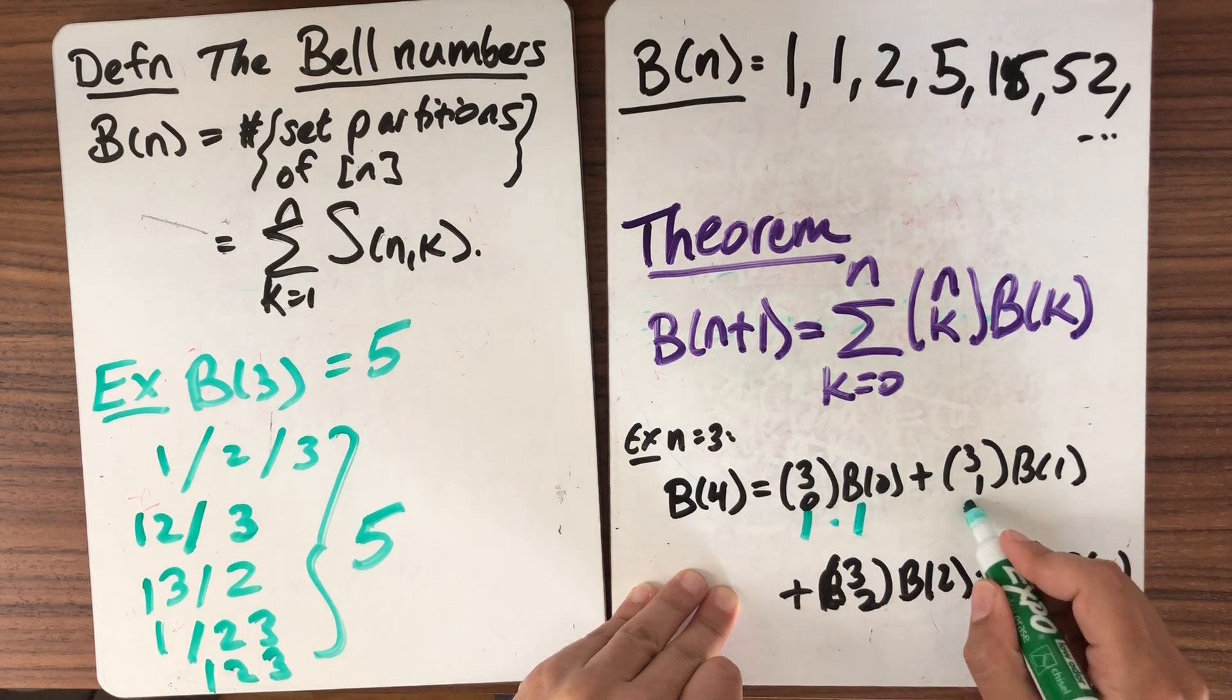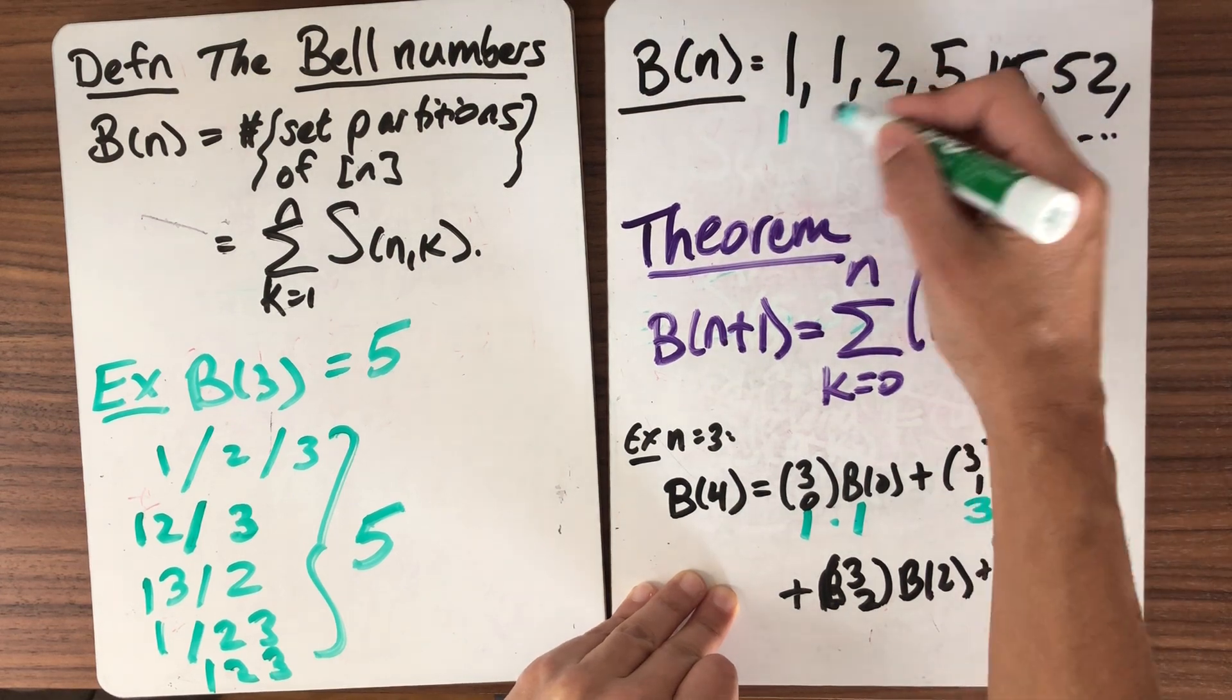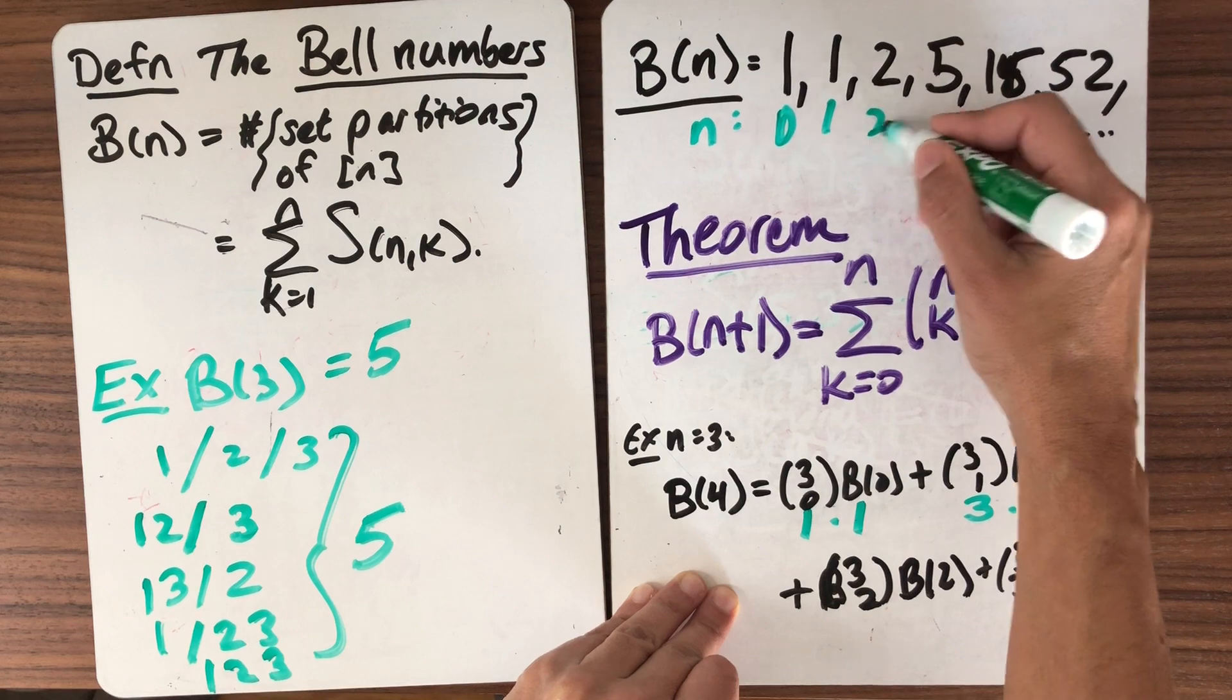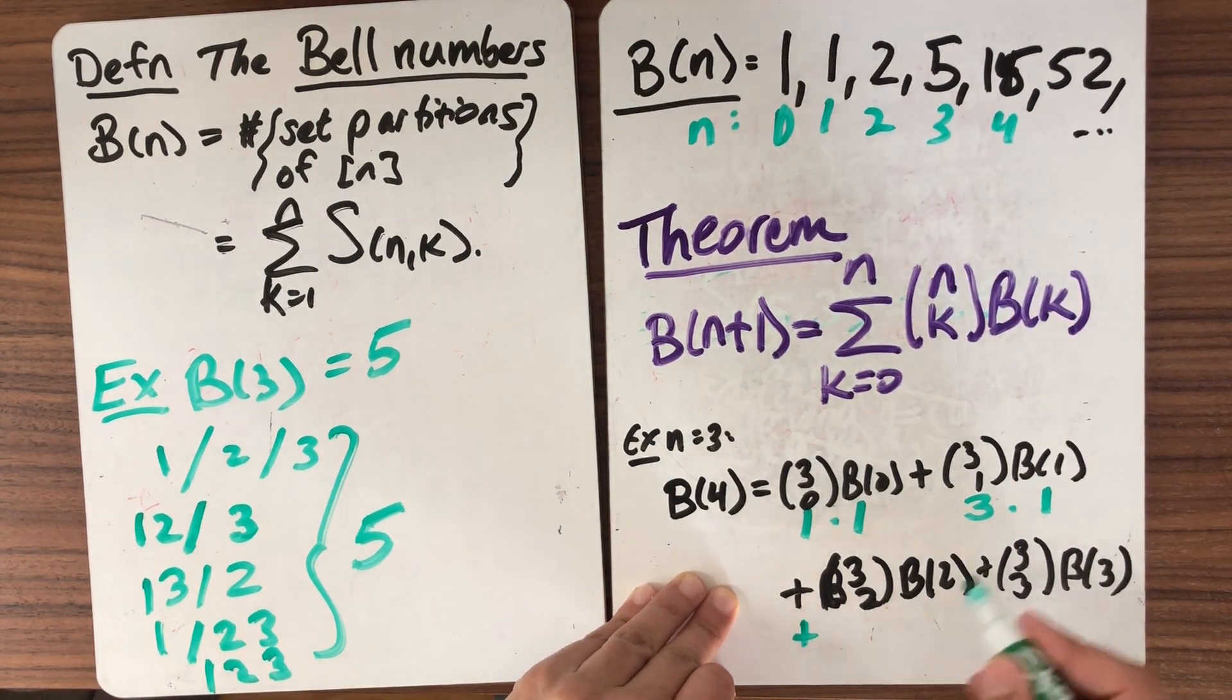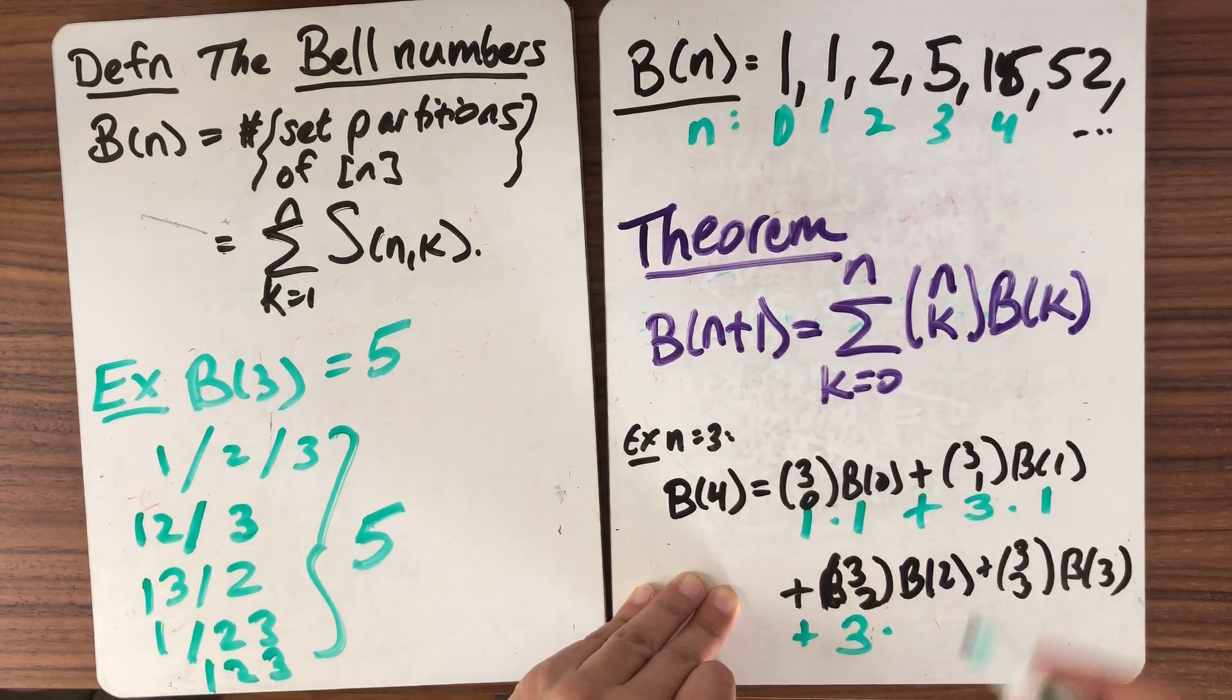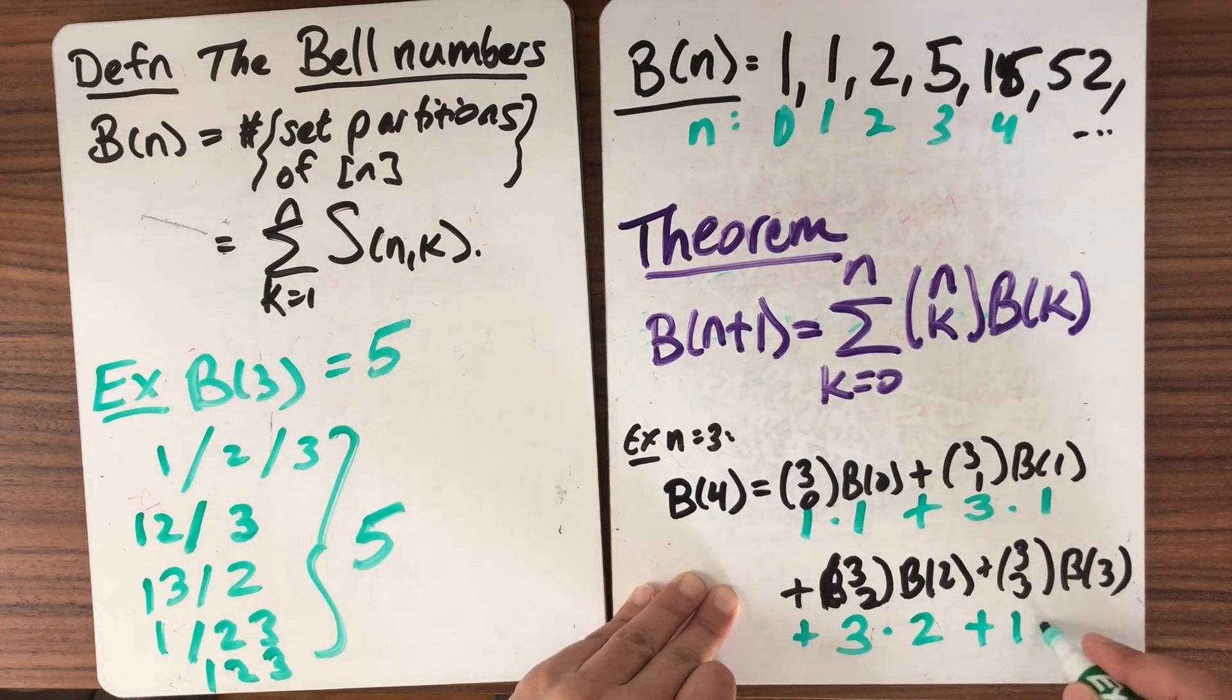And then 3 choose 1 is 3, and B(1), I see up here, is 1. So let me maybe write down my n's. 0, 1, 2, 3, 4. Okay, and then we're going to get 3 choose 2, and B(2), I can see, is 2, and B(3) is what we've computed over here, so it's going to be 1 times 5.